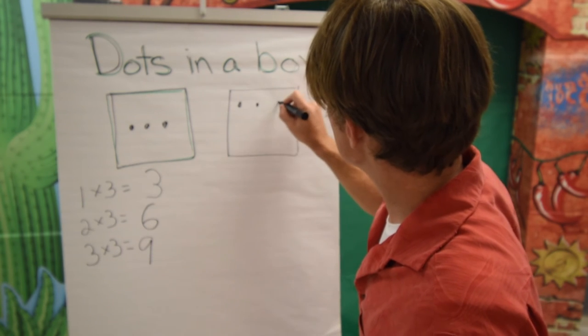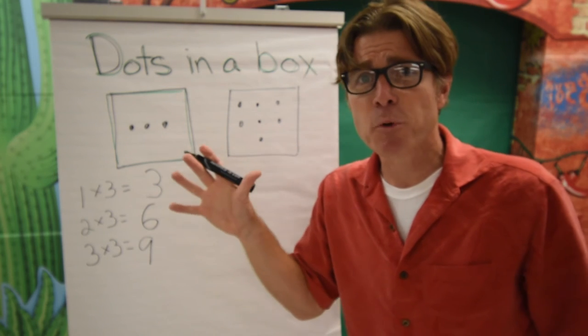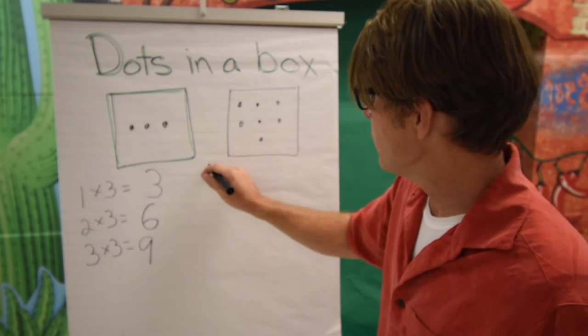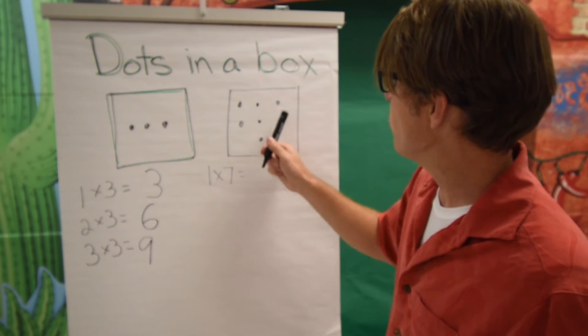And we have seven dots. One, two, three, four, five, six, seven. Need to keep those pretty orderly too. So the first one is one times seven. Just count the dots. One, two, three, four, five, six, seven.